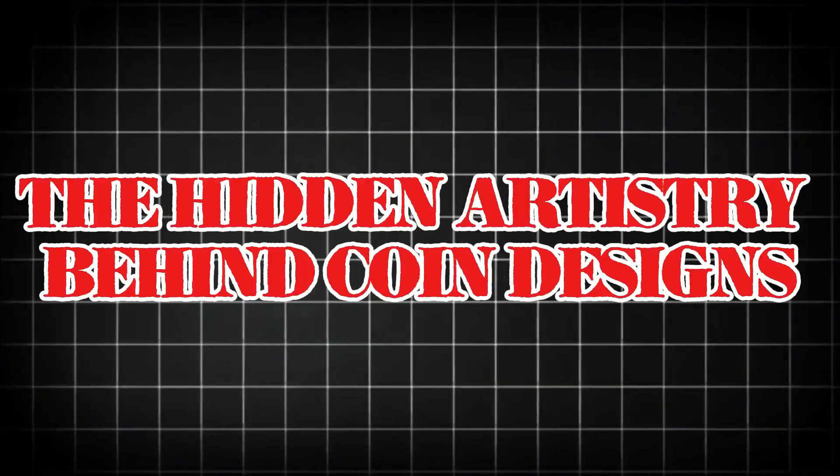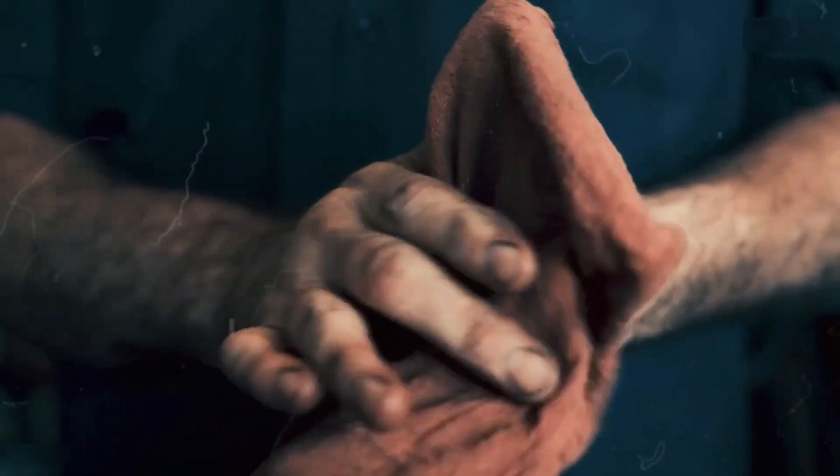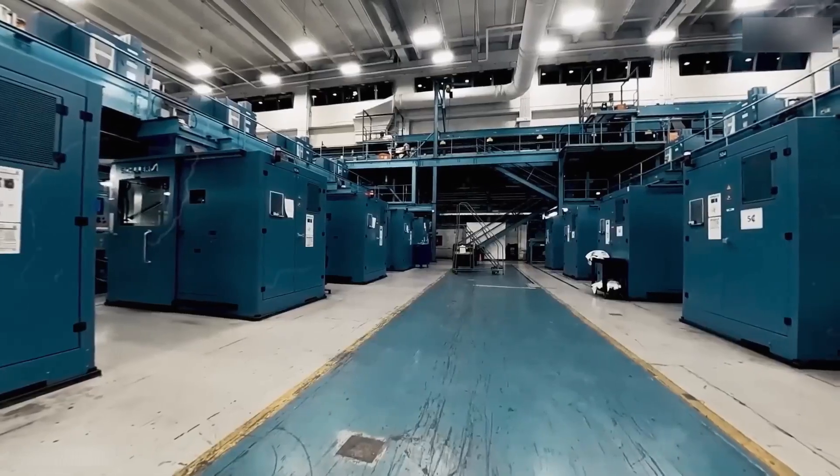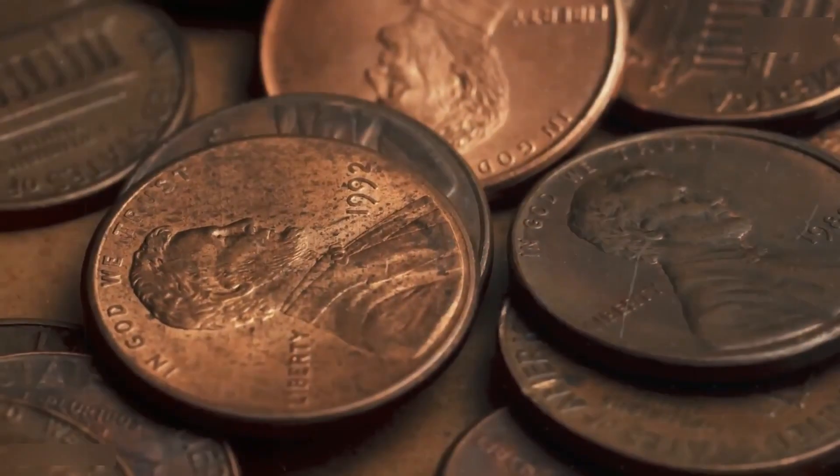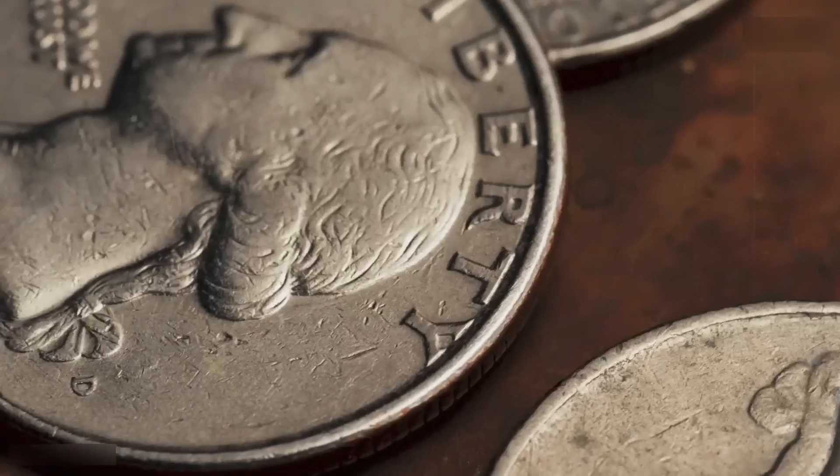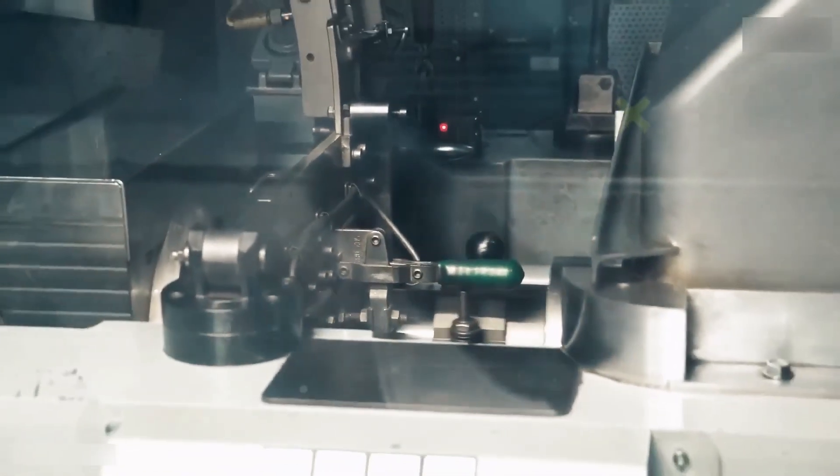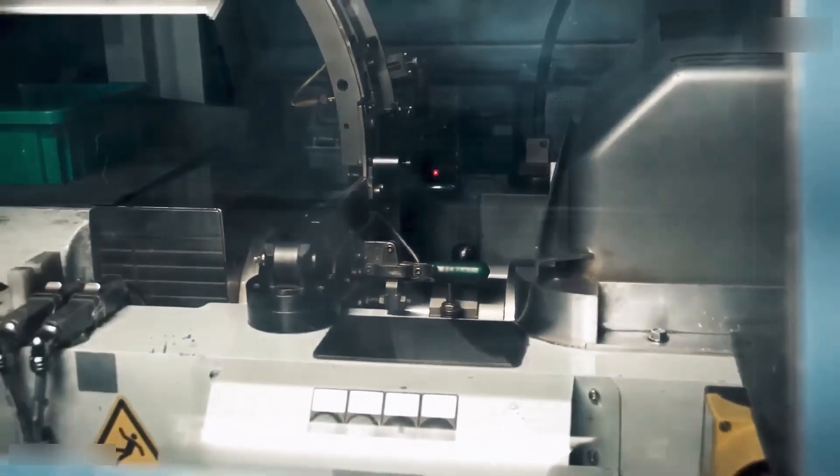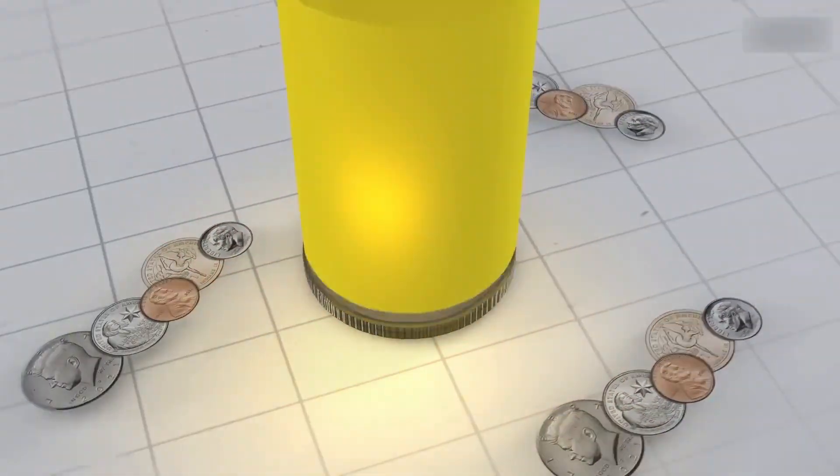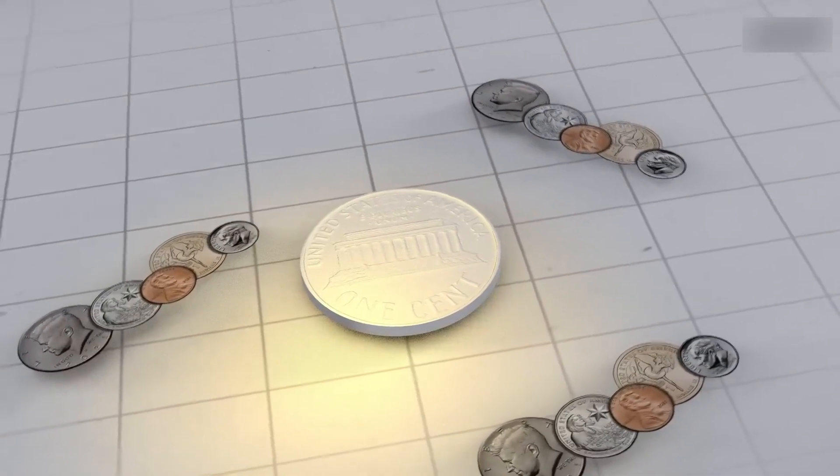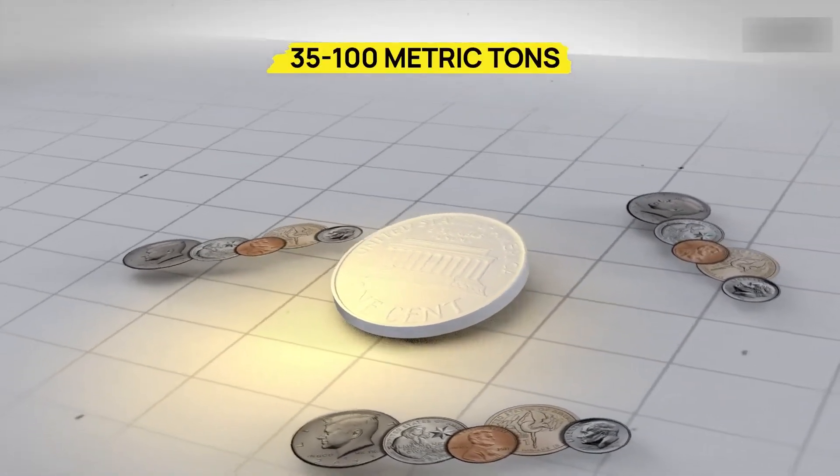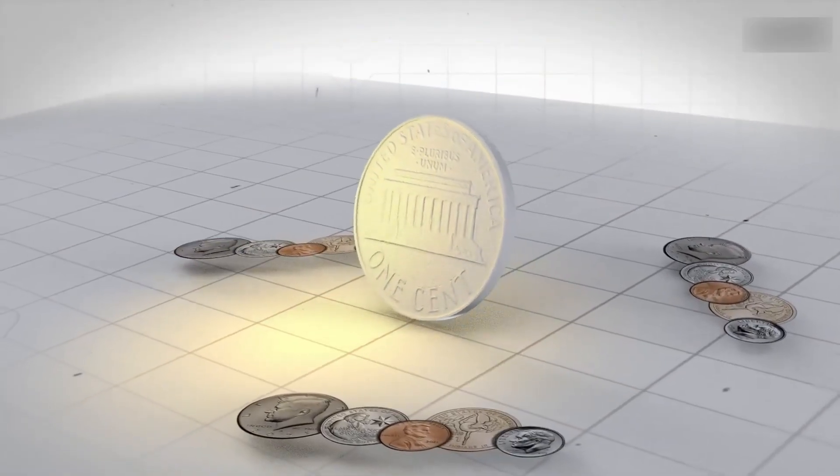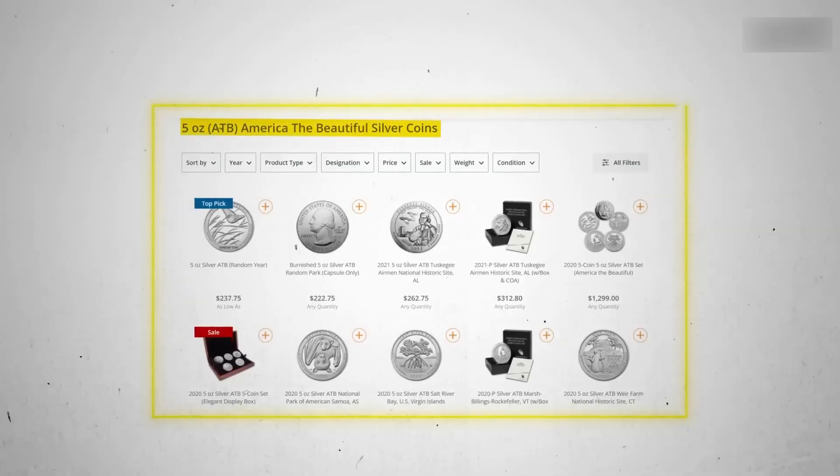The hidden artistry behind coin designs. Before a single coin ever hits the press, there's a quiet world of artistry at work. Skilled sculptors and designers create the images you see—portraits, landmarks, symbols of liberty—using both traditional hand-carving techniques and advanced 3D digital modeling. Every line, curve, and shadow is meticulously planned to survive decades of wear and tear while staying visually stunning. It's not just metal stamping; it's the fusion of art and engineering.